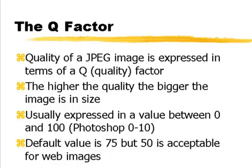With JPEG, if you use something like Photoshop, you'll notice there are different quality settings called a Q factor, often expressed between one and a hundred — in Photoshop particularly it is between zero and ten. It indicates what level of quality you want, meaning how strongly it implements its compression algorithm.